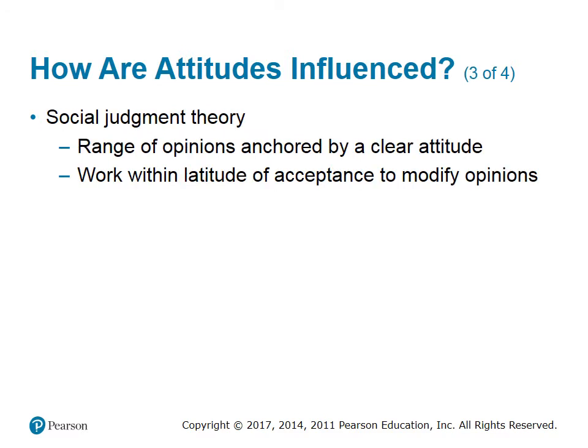Social judgment theory: people have a range of opinions on a certain subject anchored by a clear attitude. While it's seldom possible to change the anchor position, communicators can work within this range — called a person's latitude of acceptance — to modify a person's opinion.